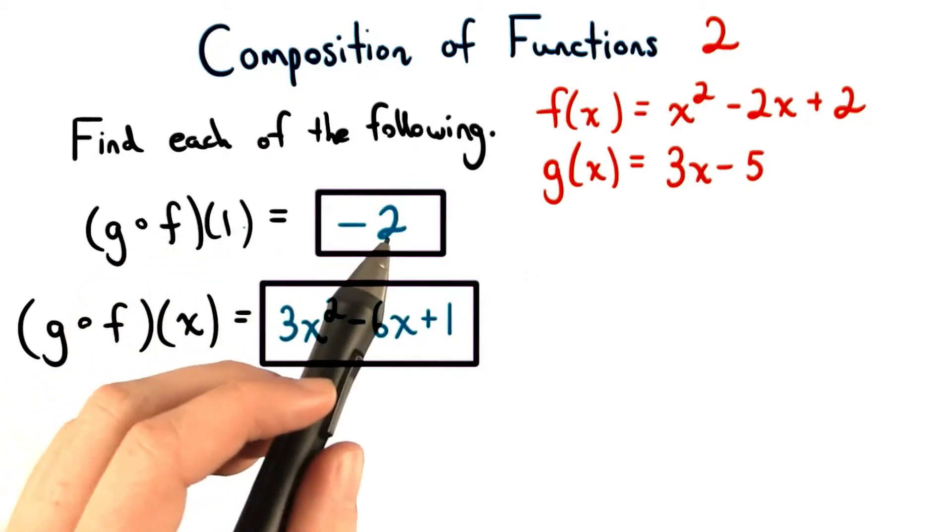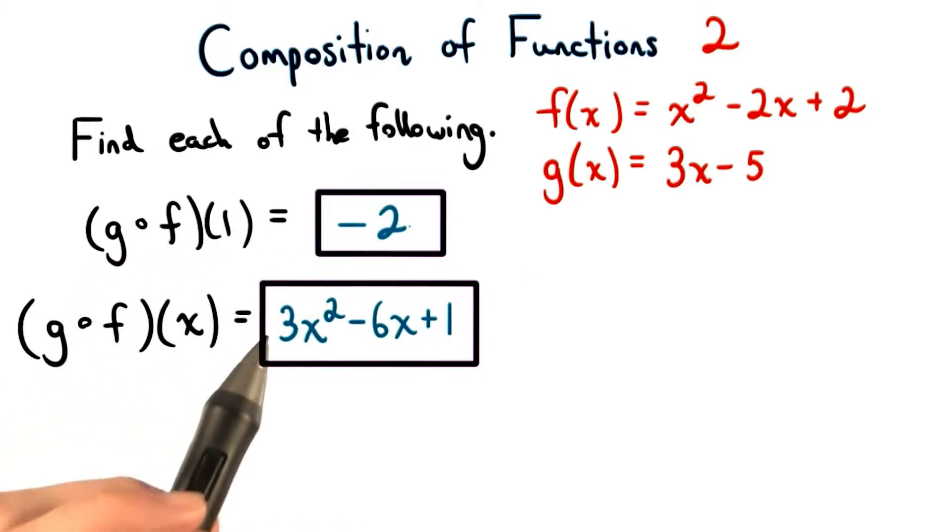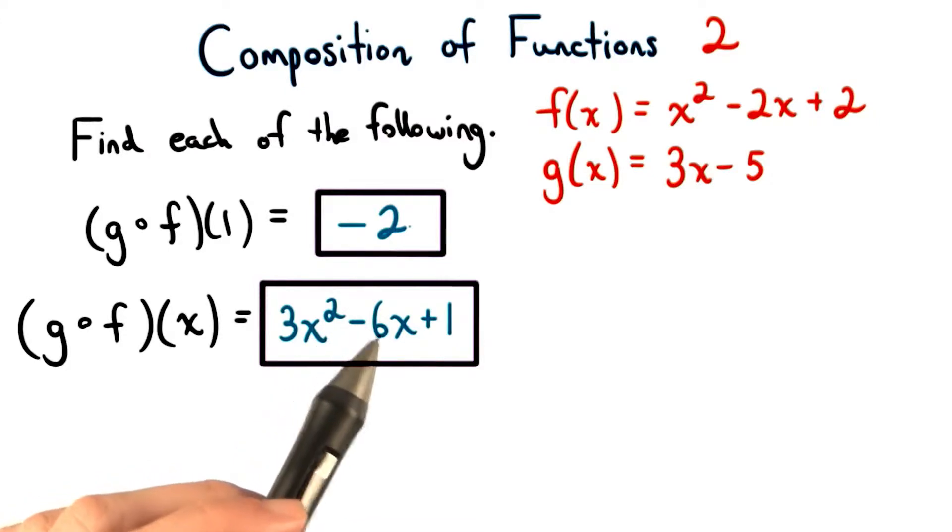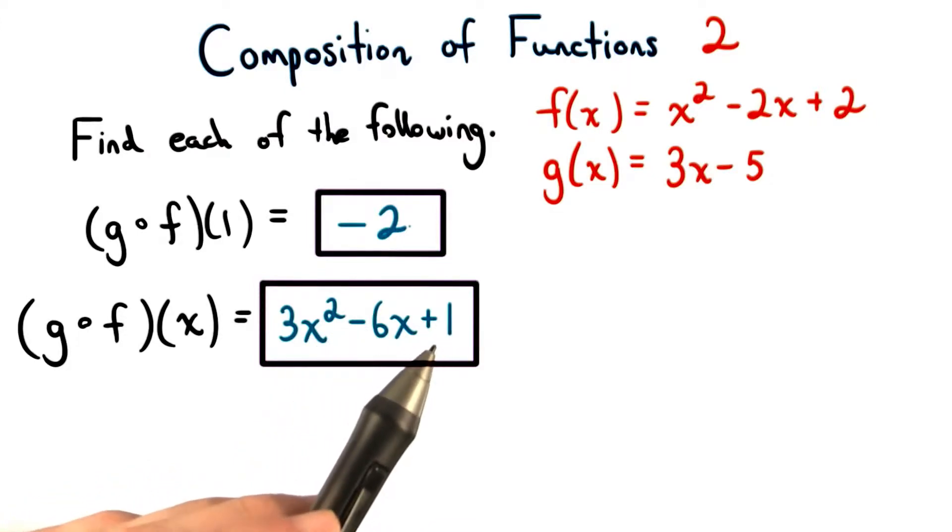Here, g of f of 1 equals negative 2, and g of f of x equals 3x squared minus 6x plus 1. Great solving if you got these two right.